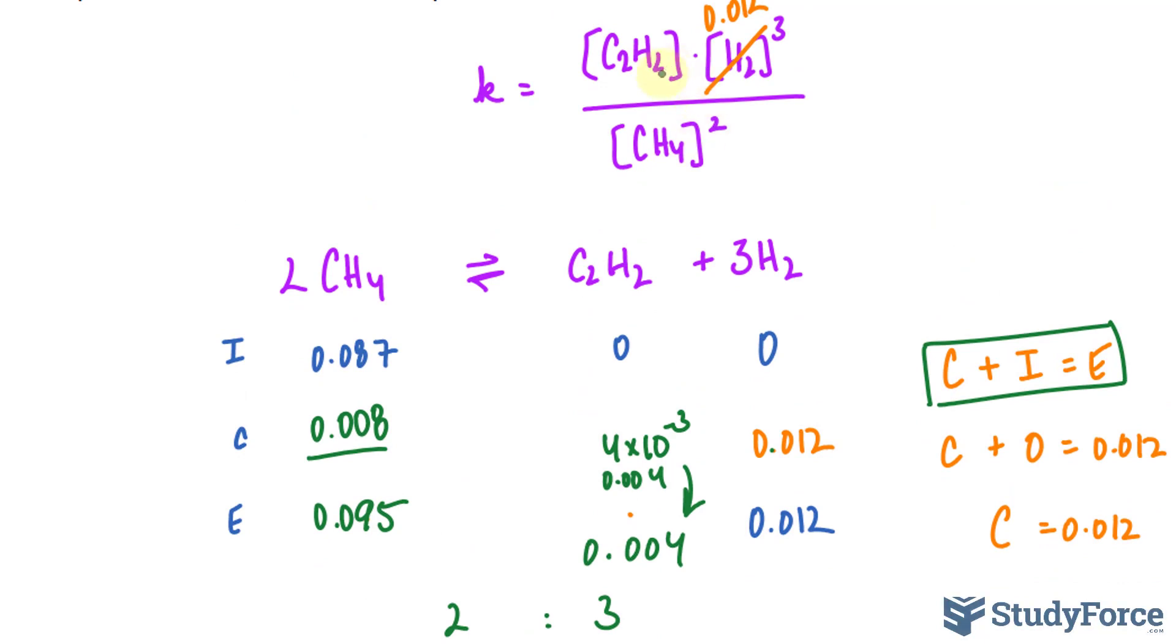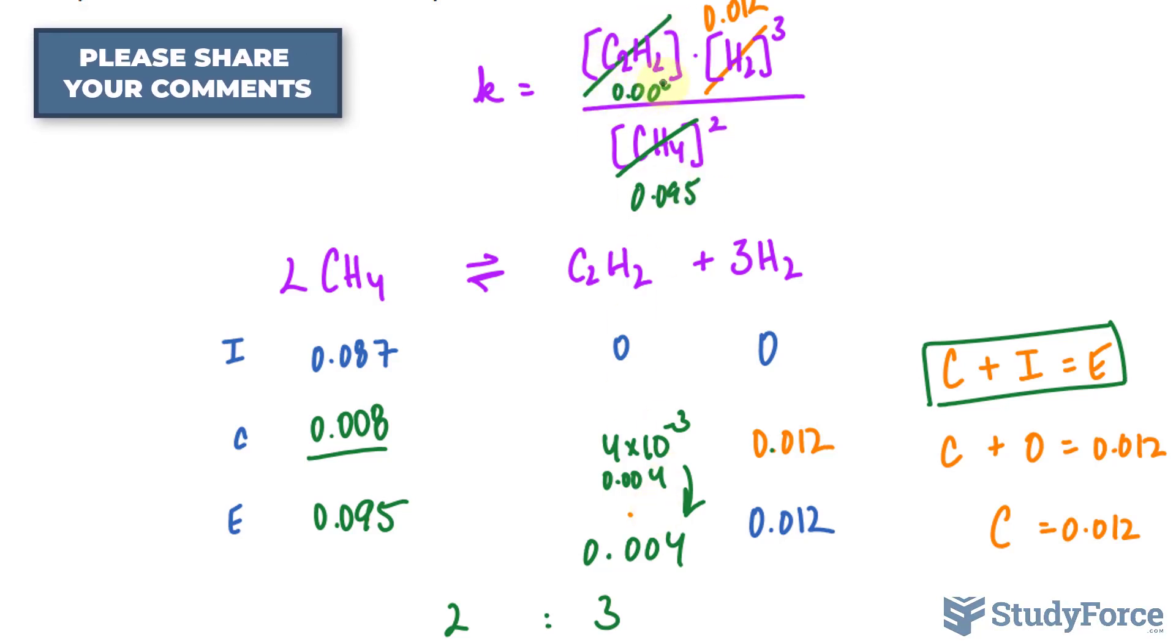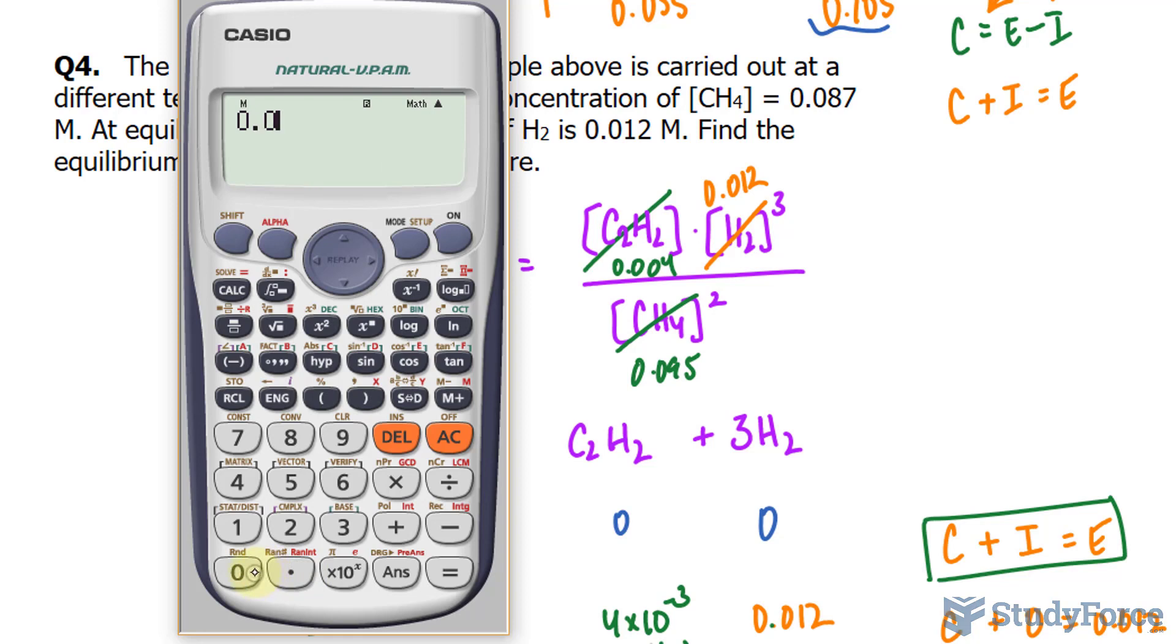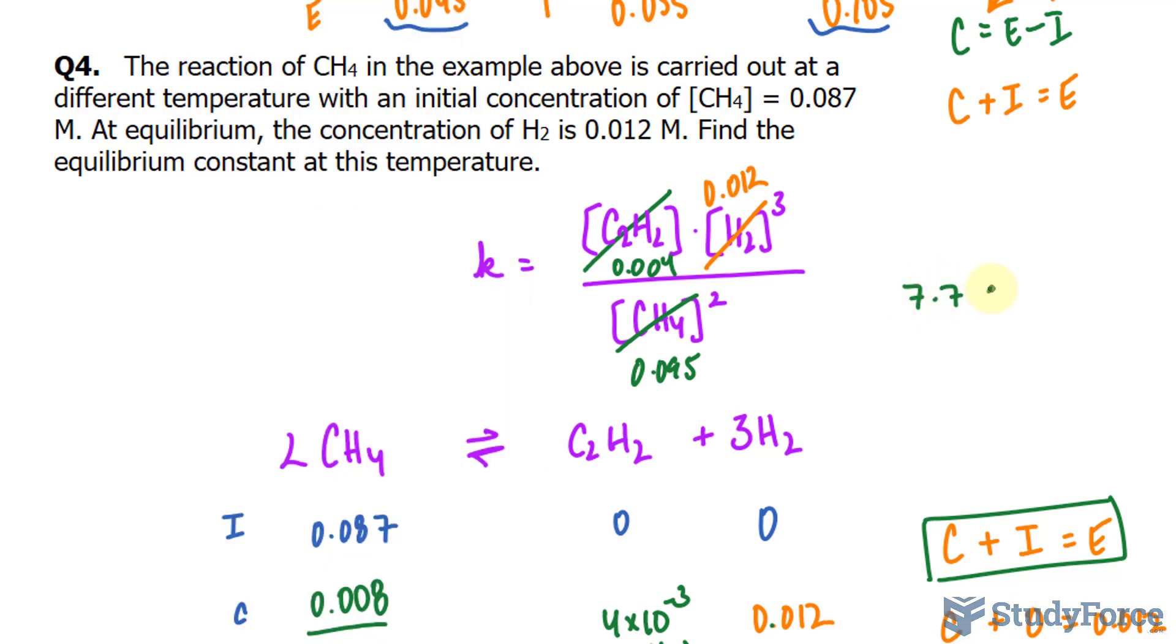And now we'll place these numbers, this number here raised to the power of 2 eventually, and this one is 0.004. Using our calculator, 0.004 times 0.012 raised to the power of 3, that then gets divided by 0.095 raised to the power of 2, and we get 7.65, and we need this to two significant figures, 7.7 times 10 to the power of negative 7.